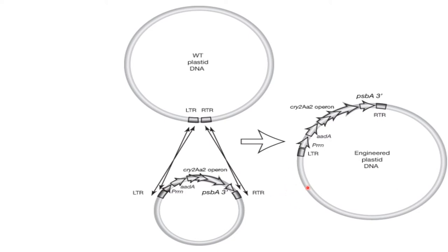The insert can contain either a single gene flanked by independent 5' and 3' regulatory regions including a promoter, 5' UTR, and 3' UTR, or multiple genes with a single promoter that regulate expression of an operon with individual ribosome binding sites upstream of each open reading frame. In this example, Bacillus thuringiensis cry2Aa gene operon is inserted into the plastid genome generating insecticidal protein. The 16S ribosomal RNA promoter drives expression of the aadA gene and the cry2Aa2 operon, with the psbA 3' region as terminator.